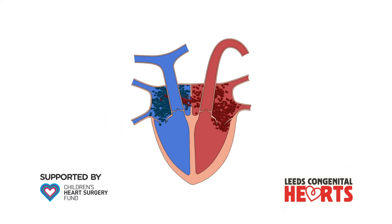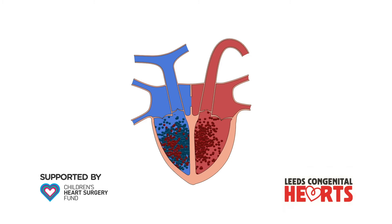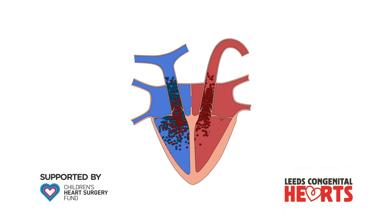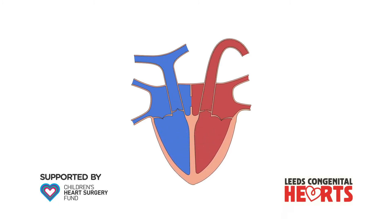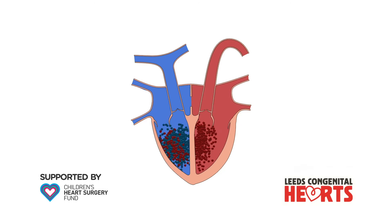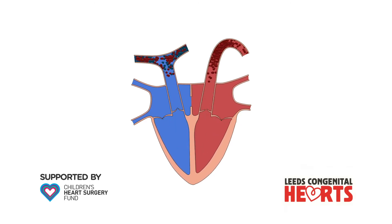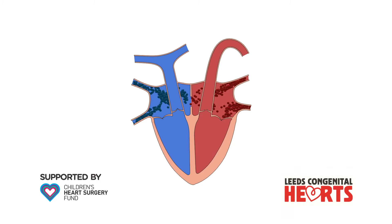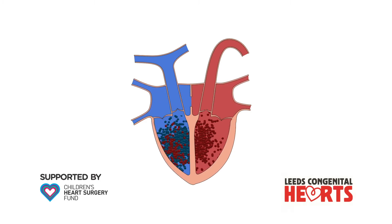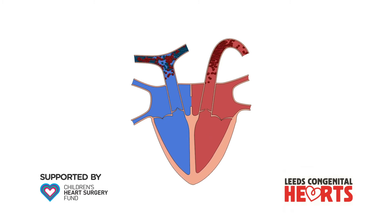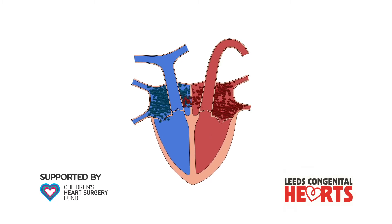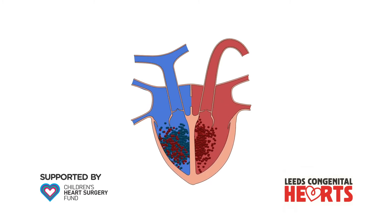When an ASD is present, some of the blood that should flow from the left atrium to the left ventricle passes through the ASD to the right atrium and to the right ventricle, pulmonary artery and lungs. This means that more blood flows through the right side of the heart to the lungs than flows through the left side of the heart to the body.